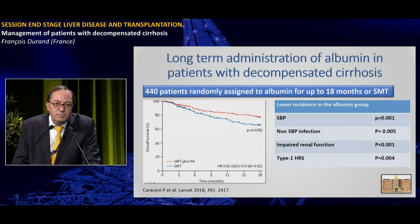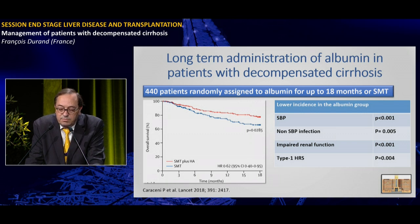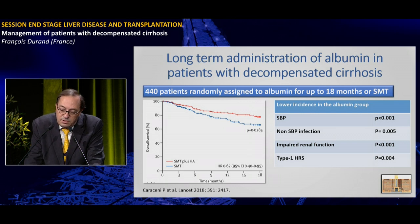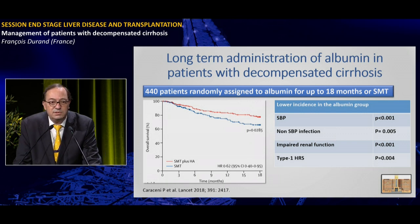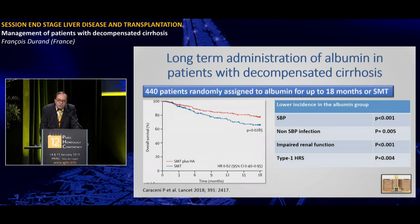These contrasting results have been challenged by a very recent study published in The Lancet exploring the potential benefit of long-term albumin administration in patients with decompensated cirrhosis. More than 400 patients were randomized to albumin for up to 18 months compared to standard medical treatment. Long-term albumin was associated with better prognosis: lower mortality, less spontaneous bacterial peritonitis, lower incidence of non-SBP infection, impaired renal function, and type 1 hepatorenal syndrome.